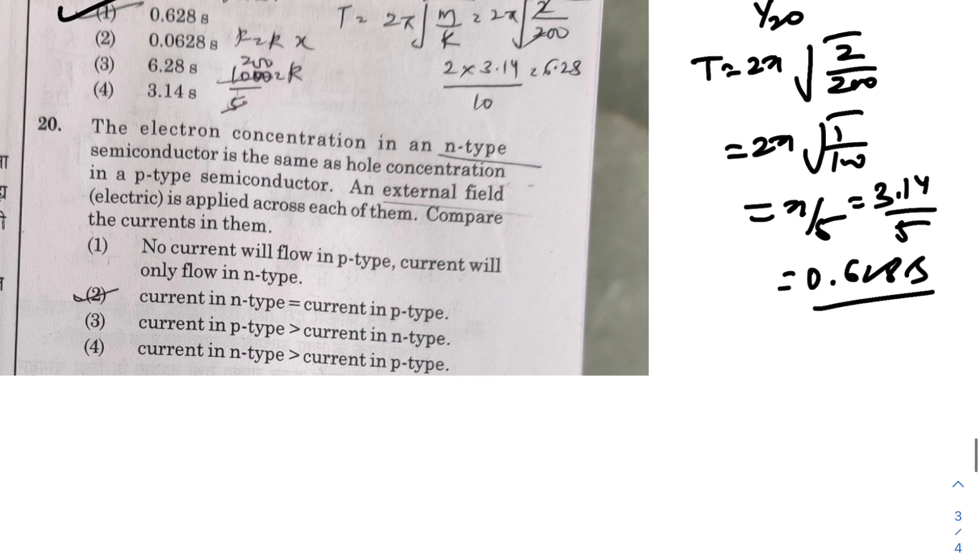Next, electron concentration in n-type semiconductor is the same as hole concentration in p-type semiconductor. So n_e equals n_h. An external field is applied across each of them. Compare the currents in them. We know electrons are more mobile. So because electrons are more mobile, current in the n-type will be going to exceed the current in the p-type.